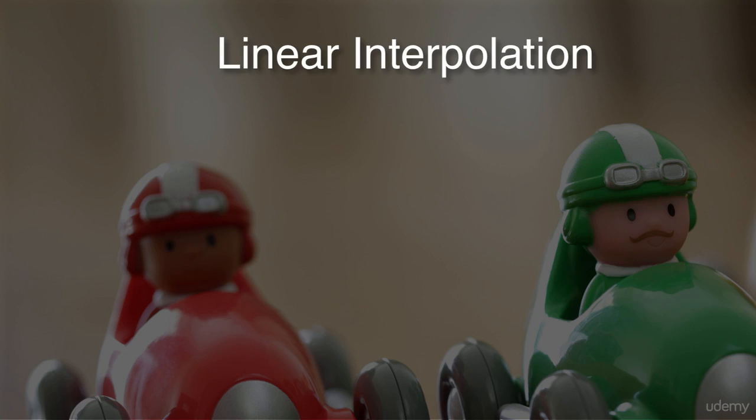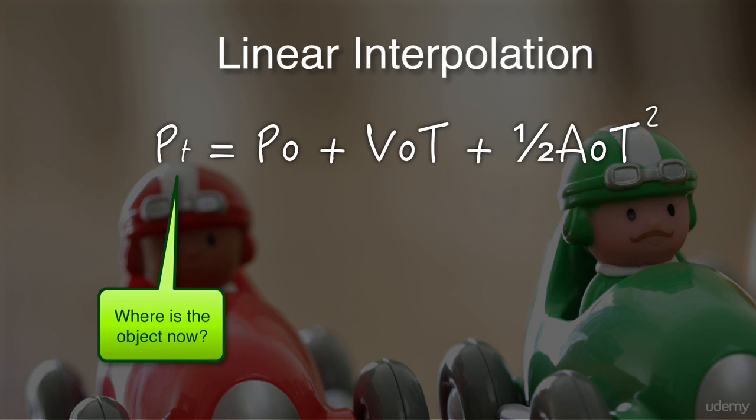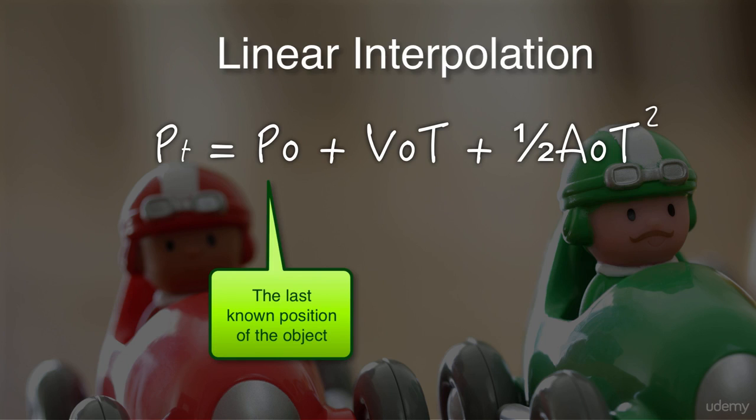Linear interpolation borrows from physics the linear movement equation which looks like this. Pt is the position of the object at time t, or the object's position we're trying to calculate. P0 is the last known position of the object.